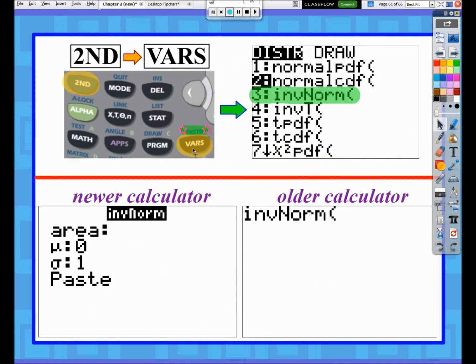If you go back to where normal CDF was, option number three is inverse norm.